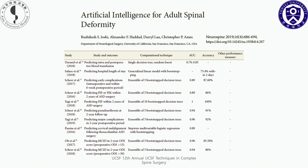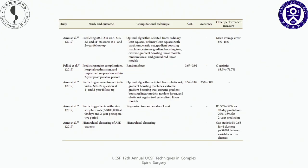This paper is very interesting to me — Professor Ames published a review article about artificial intelligence for adult spinal deformity in 2019 in Neurospine. This paper introduced several articles using AI in ASD surgery.